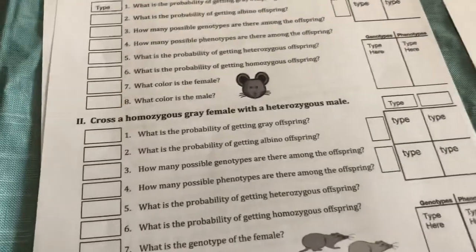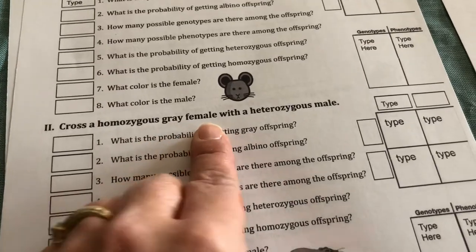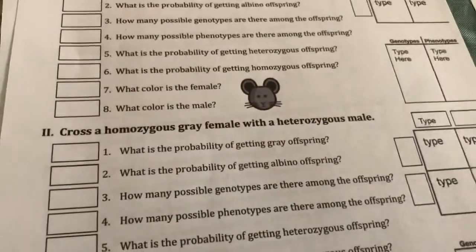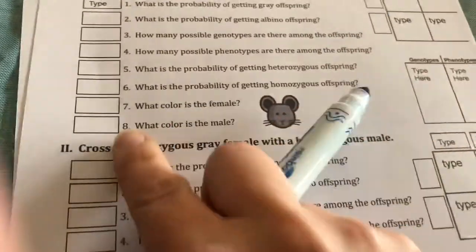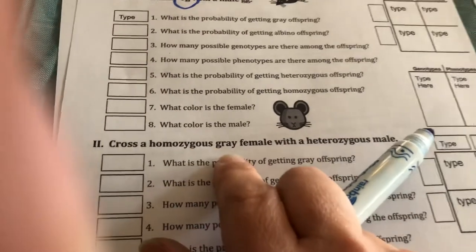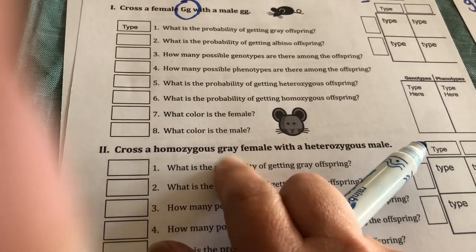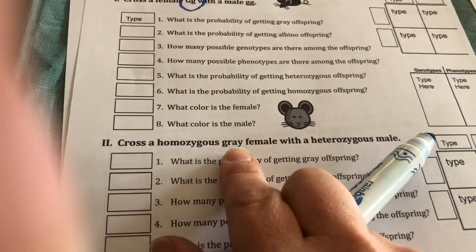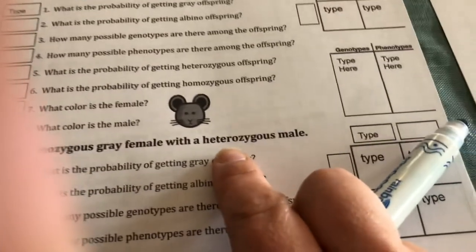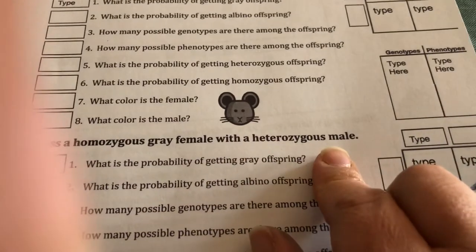When it's time for problem number two, you're told you have a homozygous gray female and a heterozygous male. Homozygous gray will mean homozygous means two of the same letter. So if she's gray and it's got to be two of the same letter, go back and take a look and see which letter is it going to be, capital or lowercase, to be gray. And heterozygous male, heterozygous means you have a capital and a lowercase.